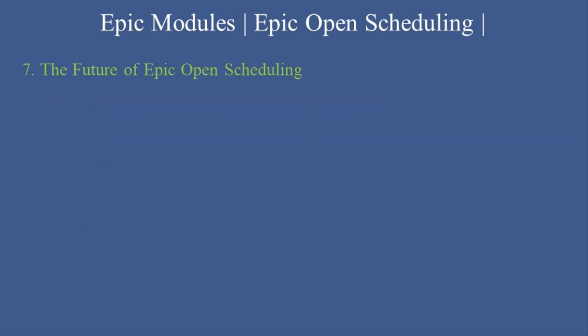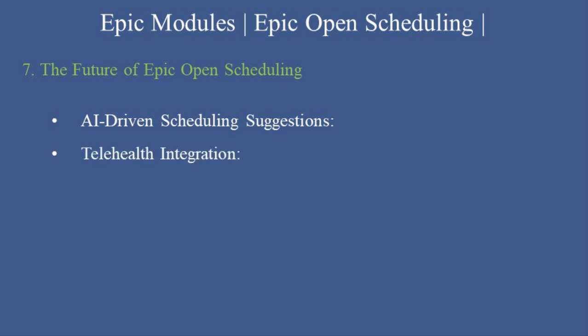The Future of Epic Open Scheduling. Epic is continually enhancing open scheduling with features like: AI-driven scheduling suggestions — tools to recommend the best slots based on patient preferences and provider availability. Telehealth integration — allowing patients to book virtual visits through the same platform. Expanded eligibility checks — incorporating insurance verification and prior authorization into the booking process.